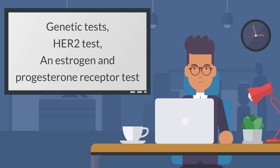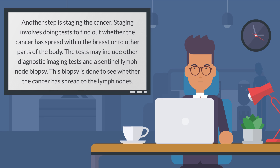These tests may include genetic tests, a HER2 test, and an estrogen and progesterone receptor test. Another step is staging the cancer, which involves doing tests to find out whether the cancer has spread within the breast or to other parts of the body. The tests may include other diagnostic imaging tests and a sentinel lymph node biopsy, done to see whether the cancer has spread to the lymph nodes.